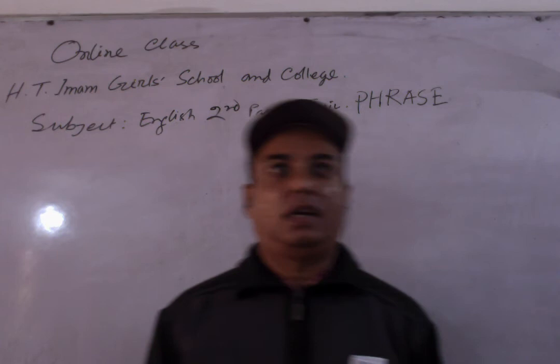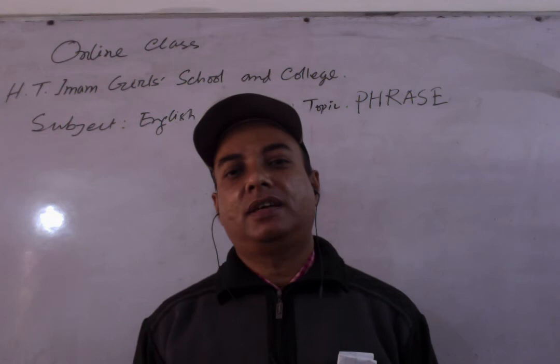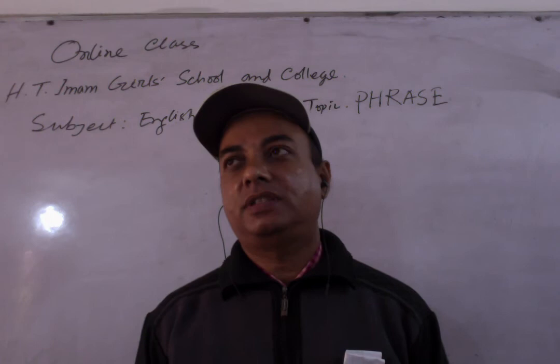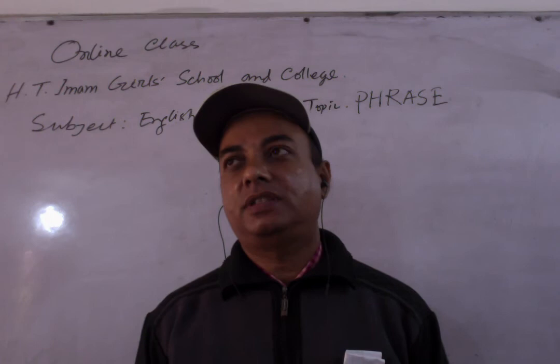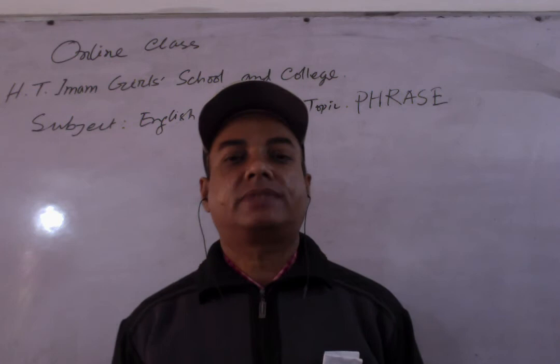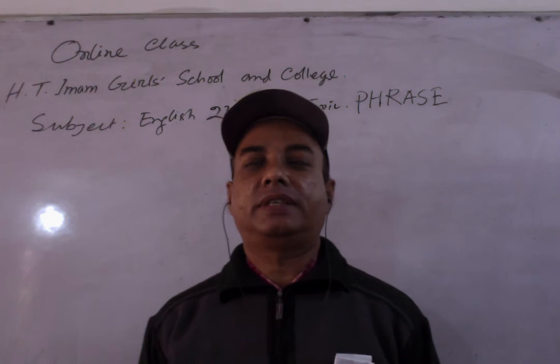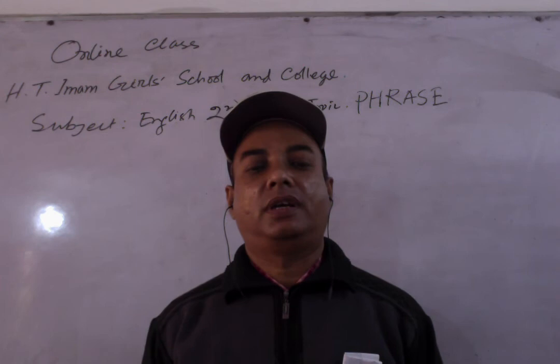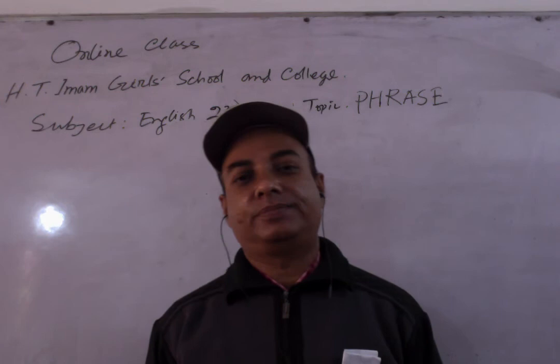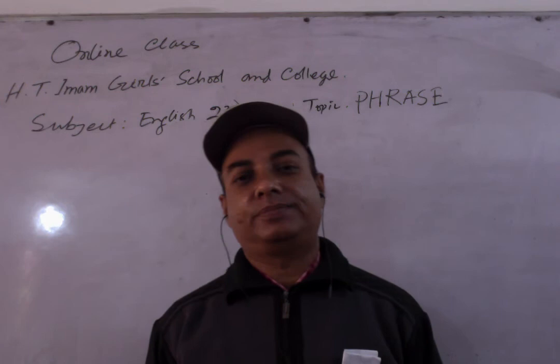Another important phrase is the infinitive phrase. The structure is: 'to' plus present form of verb plus other words. An infinitive phrase is used to express purpose, aims, or some object in a sentence. For example, 'I went to market to buy some books.' Here, 'to buy some books' is an infinitive phrase — 'to' plus the verb 'buy' plus other words.